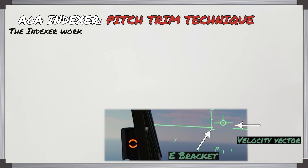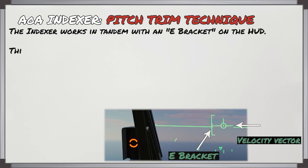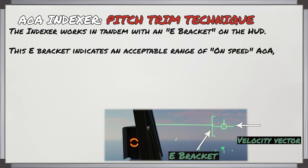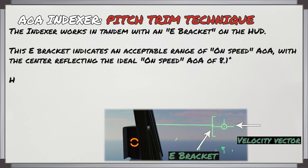The indexer works in tandem with an E-bracket on the heads-up display. This E-bracket indicates an acceptable range of on-speed angle of attack, with the center of it reflecting the ideal on-speed angle of attack of 8.1 degrees.